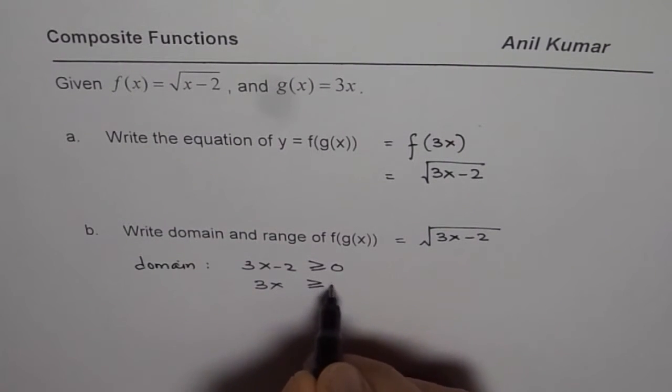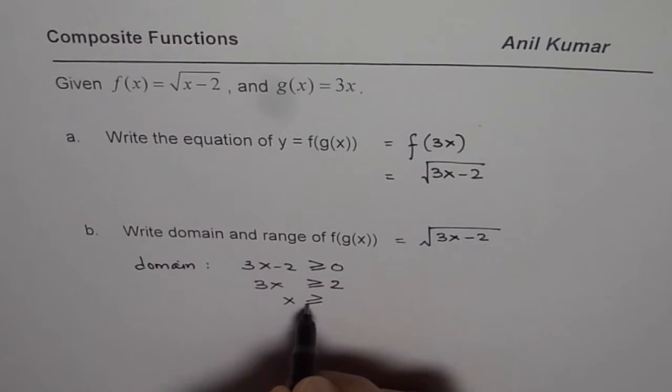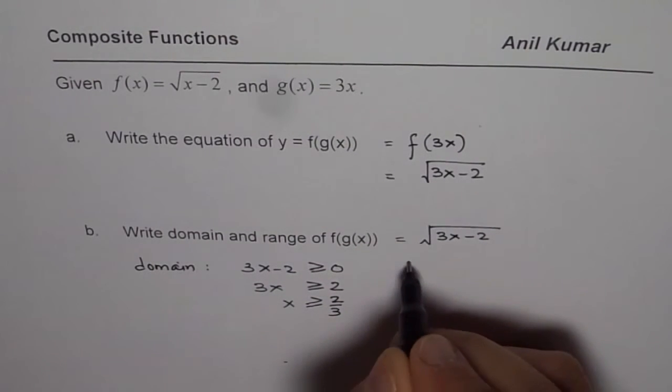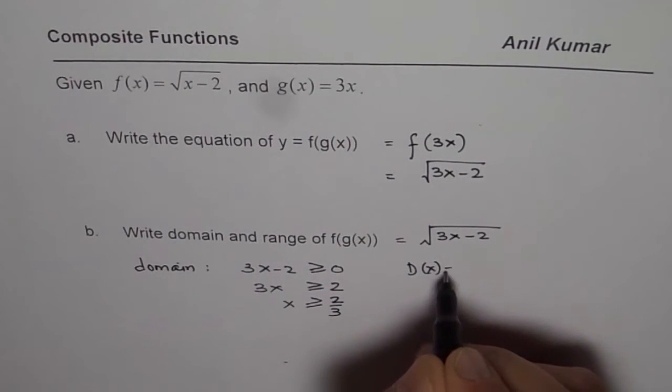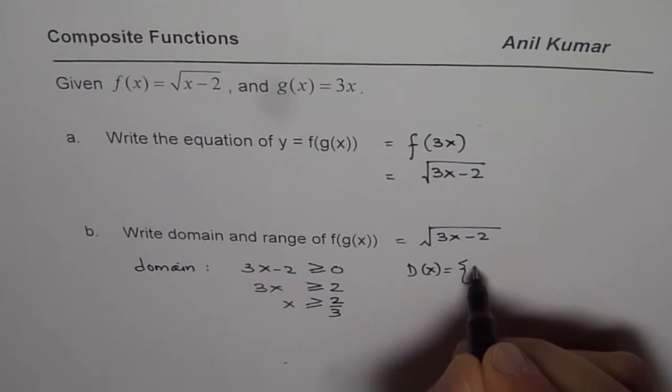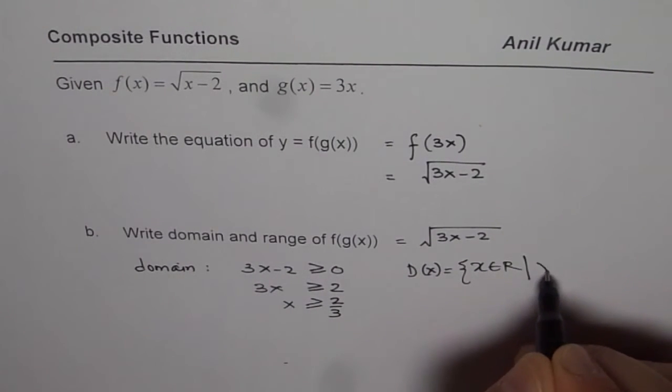That is to say 3x is greater than or equal to 2, or x is greater than or equal to 2 over 3. And therefore we can write that the domain of the function equals x belongs to real numbers where x is greater than or equal to 2 over 3.